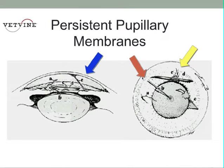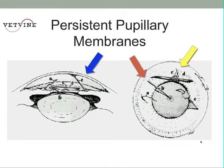Another configuration is a pupillary membrane that arises from the collarette, as they all do, but then attaches or inserts on the anterior lens capsule, leading to a focal lenticular opacity in that area, whether it's due to pigment or a little white spot at the insertion point.